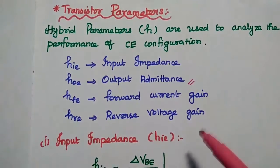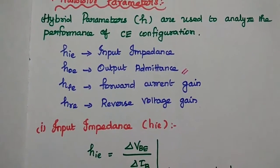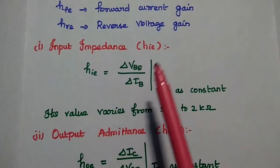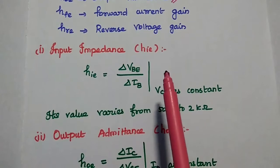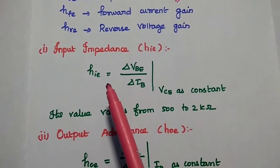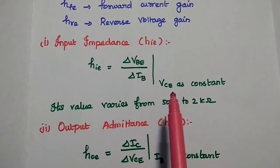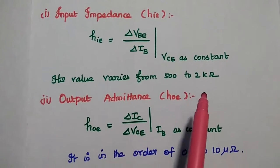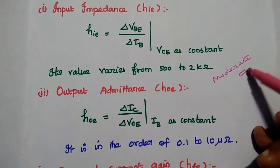At the output side, we consider admittance because it has very high impedance at the output side. Input impedance HIE — according to Ohm's law, impedance is the ratio of voltage to current. HIE is equal to the ratio of change in input voltage to change in input current with VCE as constant. Its value varies from 500 ohms to 2 kilo ohms, making it a moderate input impedance value.